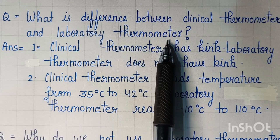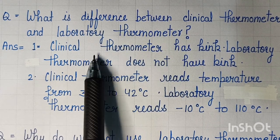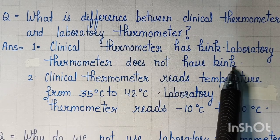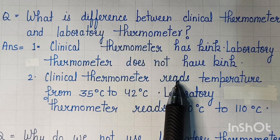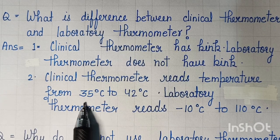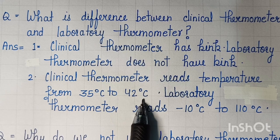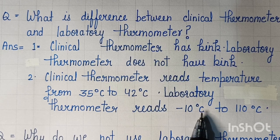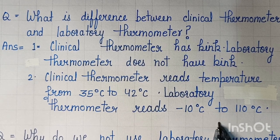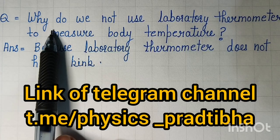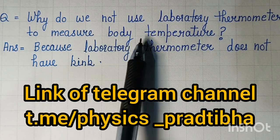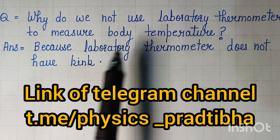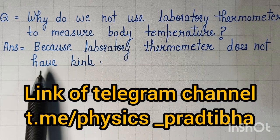The second important question is: what is the difference between a clinical thermometer and a laboratory thermometer? There are two main differences. First, the clinical thermometer has a kink while the laboratory thermometer does not. Second, the clinical thermometer reads from 35 degrees Celsius to 42 degrees Celsius, but the laboratory thermometer has a wider range, from minus 10 degrees Celsius to 110 degrees Celsius. We do not use the laboratory thermometer to measure body temperature because it does not have a kink.